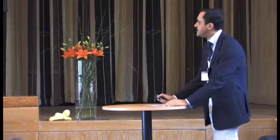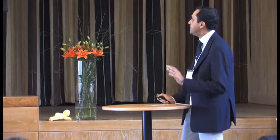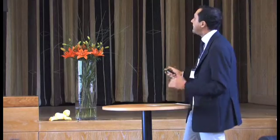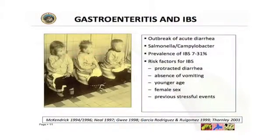In many patients, you can see symptoms of abdominal pain or irritable bowel syndrome after acute gastroenteritis. In fact, there is a prevalence of irritable bowel syndrome in 7–30% of patients after Salmonella or Campylobacter gastroenteritis. Risk factors for irritable bowel syndrome include protracted diarrhea, absence of vomiting, younger age, female sex, and previous stressful events.